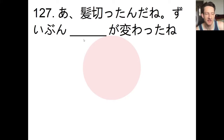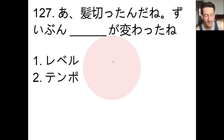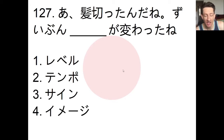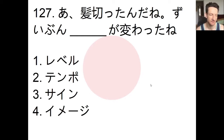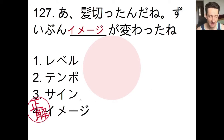Number 127: we have to fill in the blank to complete the sentence. The sentence says: あ、髪切ったんだね、ずいぶん — blank — レベル、テンポ、サイン、イメージ — が変わったね. What's the best way to complete this sentence? Pause the video, choose an answer, and we'll check. The answer is 四番です: イメージ. あ、髪切ったんだね、ずいぶんイメージが変わったね — wow, you cut your hair, you look completely different!